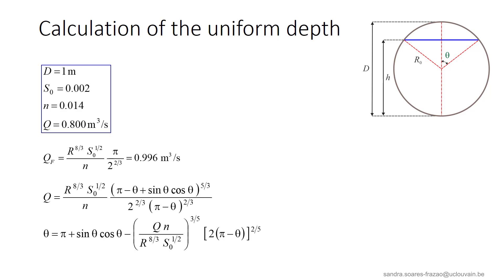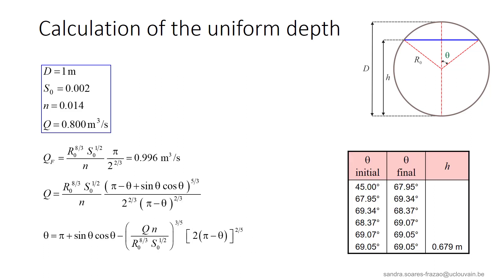The next step is to determine the depth at which the flow will establish itself for the discharge of 800 liters per second. This depth is calculated using this formula by iterating on the value of theta. The results of the iterations are indicated in the table. In order to ease the convergence of the iterations, it is better to start from a first guess corresponding to a depth in the correct part of the pipe, for example, below or above R0.